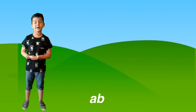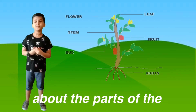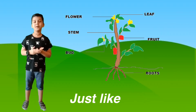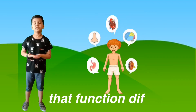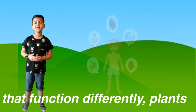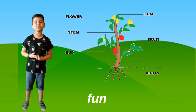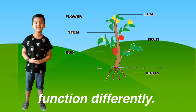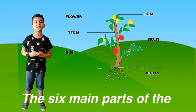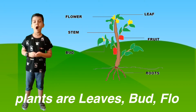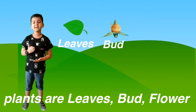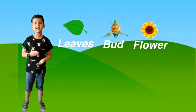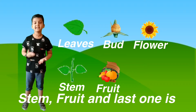Now let's learn all about the parts of a plant. Just like we human beings have different body parts that function differently, plants have different parts that function differently. The six main parts of a plant are leaves, bud, flower, stem, fruit and the last one is root.